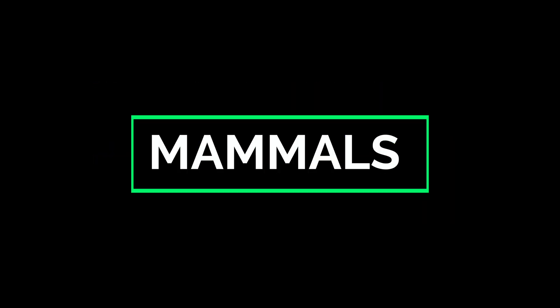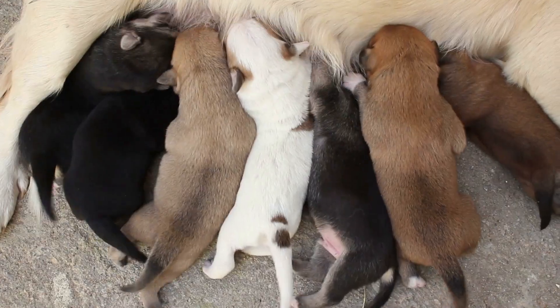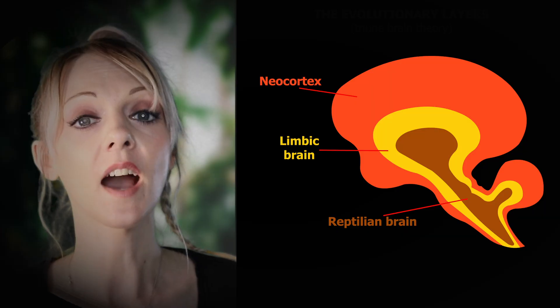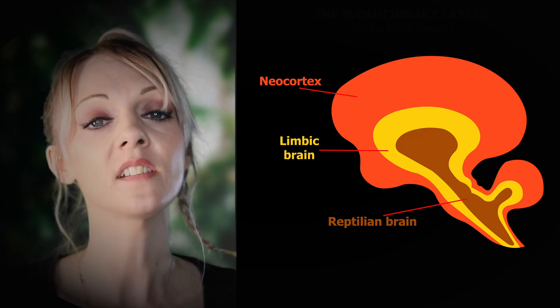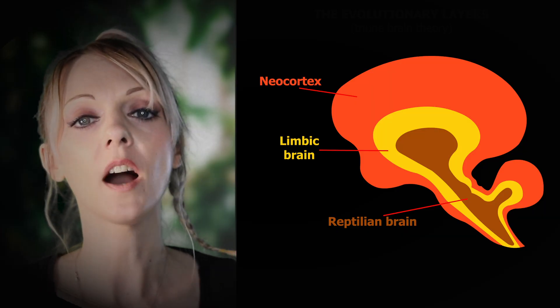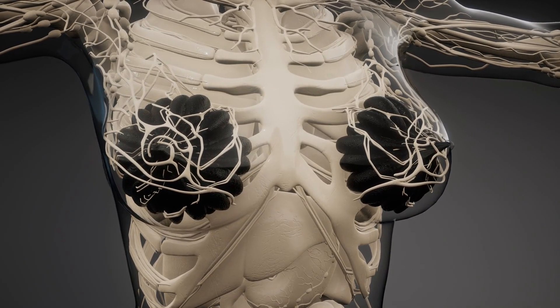Mammals are within the class Mammalia. If an animal drinks milk as a baby, they're classed as a mammal. They're also vertebrates and they have a neocortex, which basically means they've got higher brain functioning. They've also mostly got hair, free middle ear bones and mammary glands.